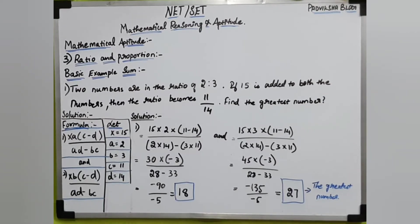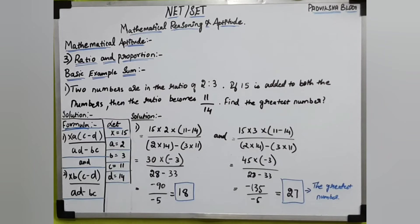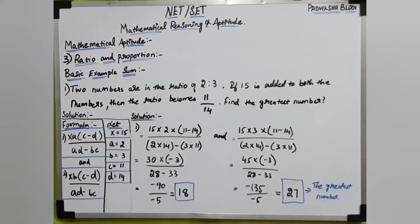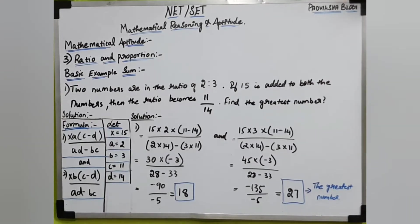Find the greatest number: we have answers 18 and 27. Comparing, the greatest number will be 27. Now this kind of formula makes the answer easy. This method may differ for some people, but I use this method to teach everyone.